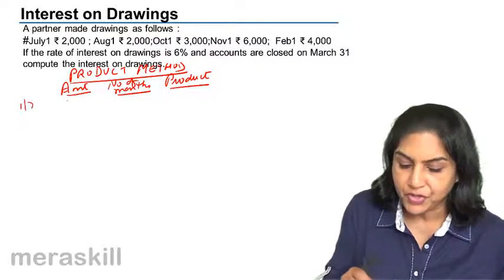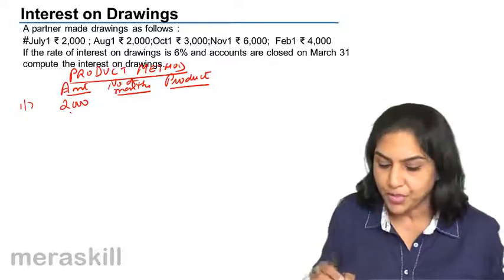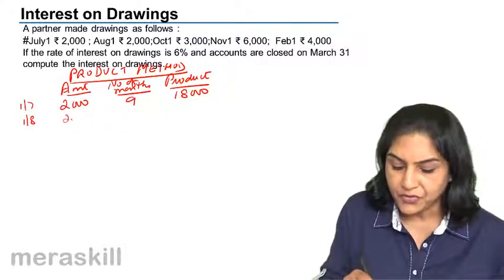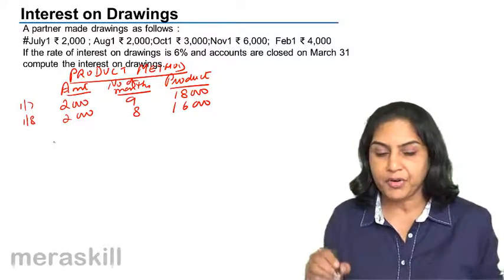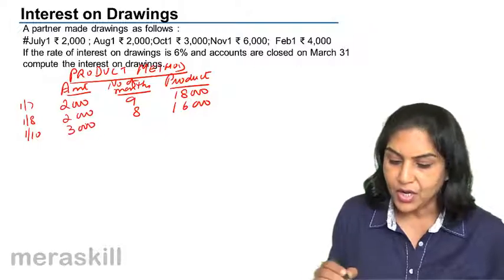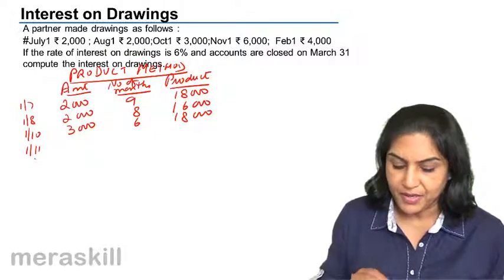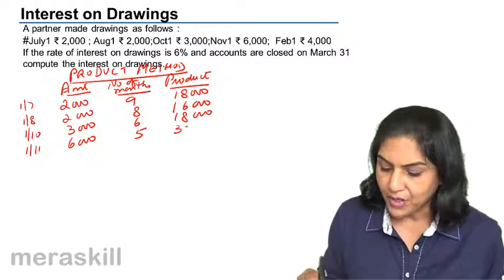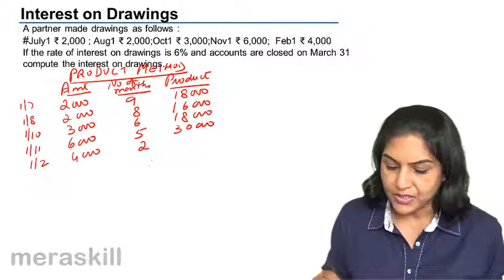For 1st July, the amount involved is 2,000. Number of months — July, August, September, October, November, December, Jan, Feb, and March — we are talking of 9 months. The product here is 18,000. For August 1st, the number of months for which interest needs to be calculated is 8. The product of the amount and the number of months is 16,000. For October, we have 3,000 for October, November, December, Jan, Feb, and March — 6 months — product is 18,000. For 1st November, amount involved is 6,000, number of months is November, December, Jan, Feb, and March — 5 months — product is 30,000. For February, it is 4,000 for 2 months, that is 8,000.